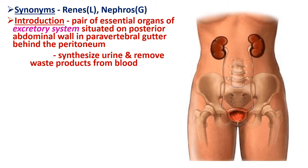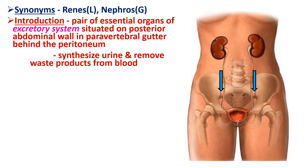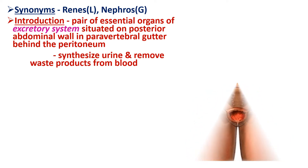In this diagram, we can see the pair of kidneys situated on either side of the vertebral column. The excretory system is formed by a pair of kidneys which synthesize urine; the urine is carried by the pair of ureters towards the urinary bladder. The urinary bladder is situated in the pelvic cavity and acts as a temporary reservoir of urine. From the urinary bladder, urine is excreted out during micturition through a tube called the urethra.